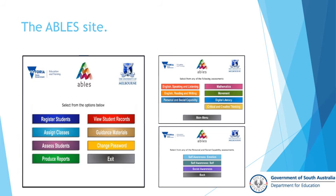When registering a student, you need to use their educational ID number. So it must be an ED ID for our data purposes, so that we can track the student. If you click on the assess students, you'll see that you have a number of options that come up. There are the English speaking and listening, English reading and viewing. And if you click on the personal and social, you will be given three additional options there, which are on the second screen underneath.